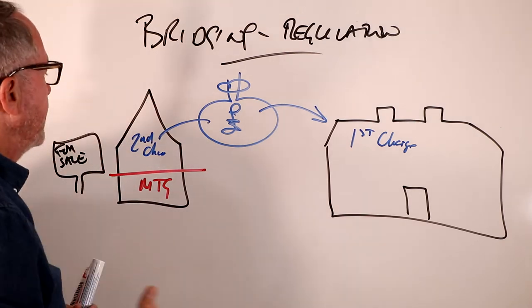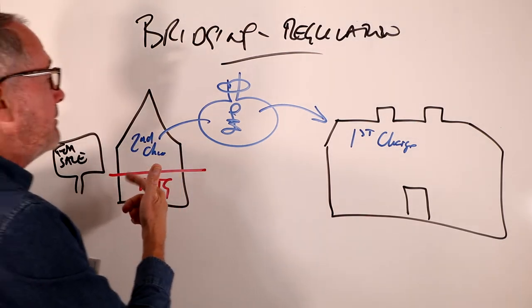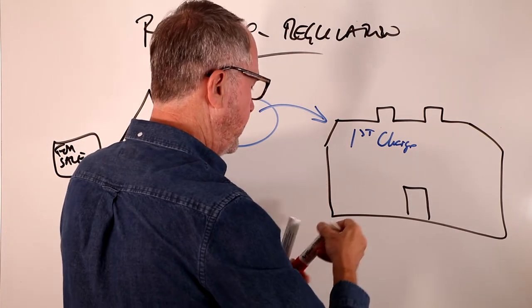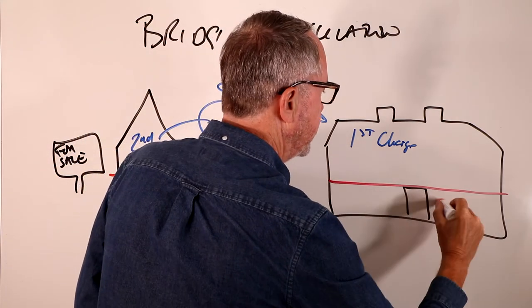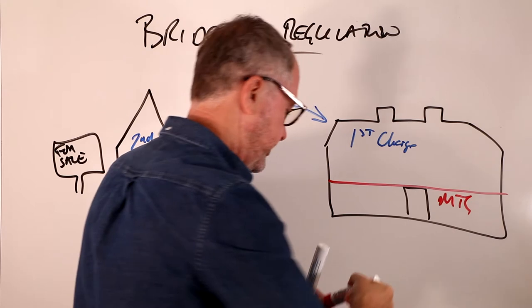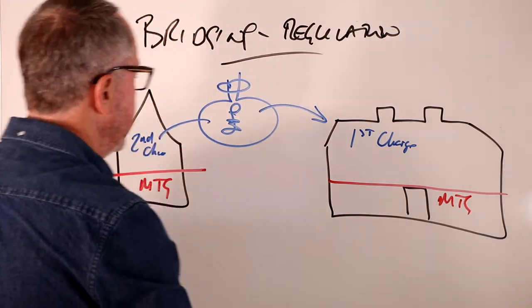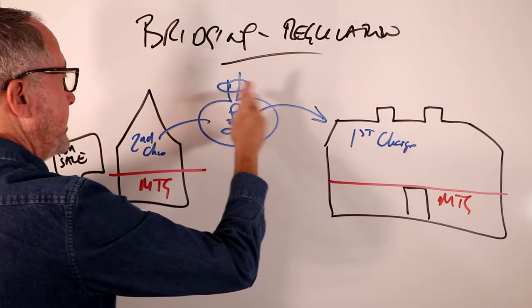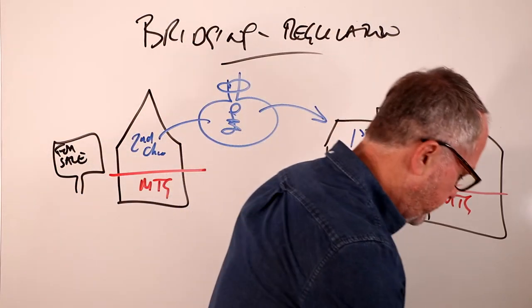But what they'll then want, of course, is that when this house is sold and maybe you've taken out a proper mortgage on this one, a first charge mortgage, then the money you've made, you basically repay it and that's called the exit strategy. So that's how bridging works.